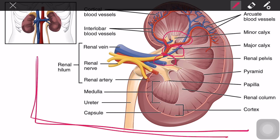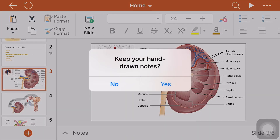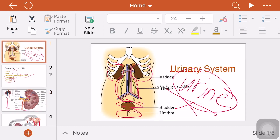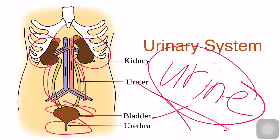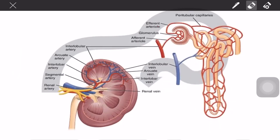From the renal pelvis, urine enters the ureters, travels down to the urinary bladder, and then to the urethra where urine finally passes out of the body.